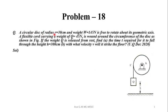A circular disk of radius R equals 30 cm and weight W equals 145 N is free to rotate about its geometric axis. A flexible cord carrying a weight Q equals 45 N is wound around the circumference of the disk. If the weight Q is released from rest, find: the time T required for it to fall through the height H equals 300 cm, and with what velocity V will it strike the floor?